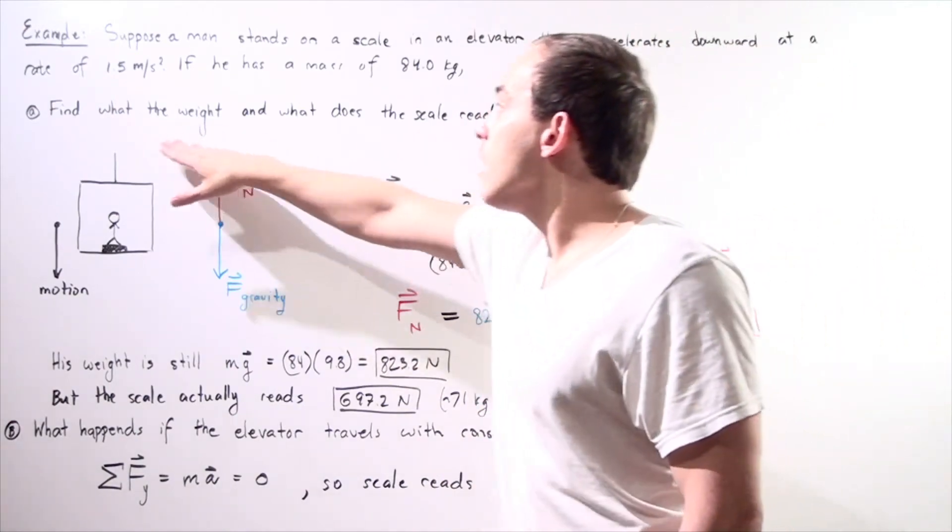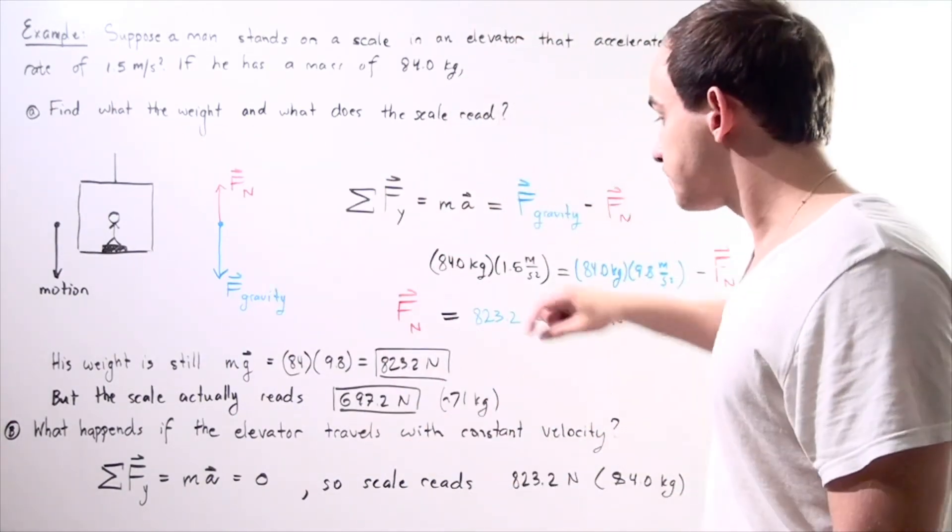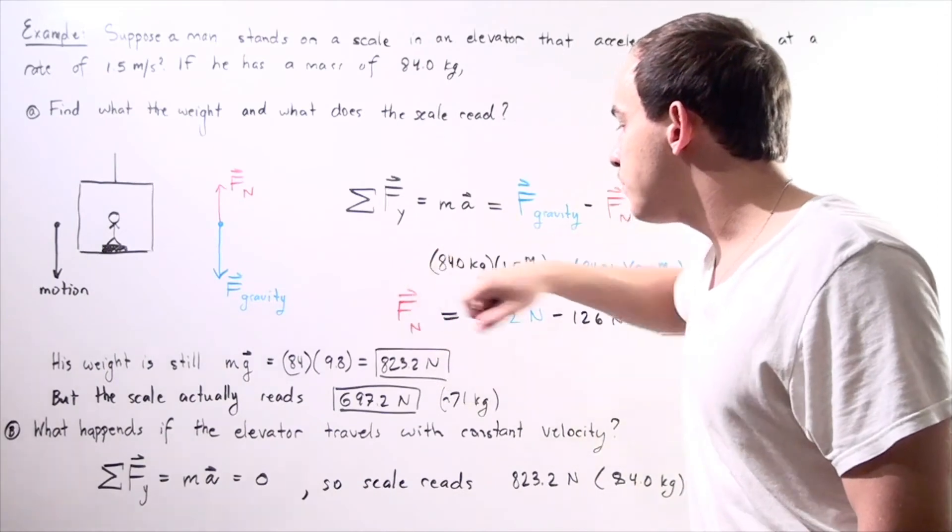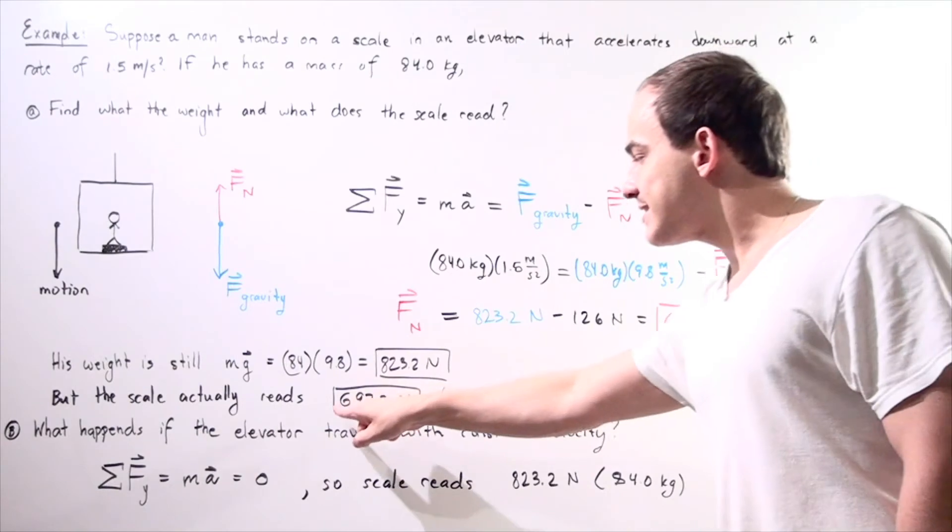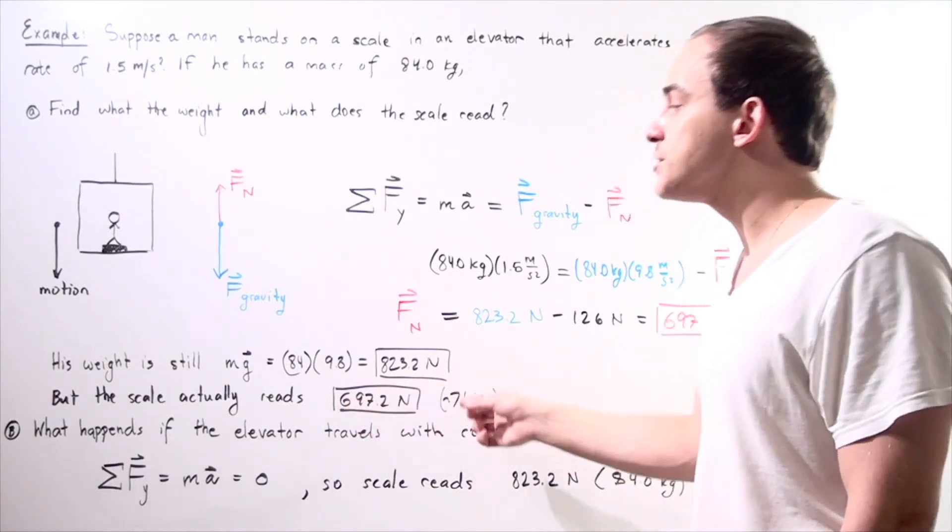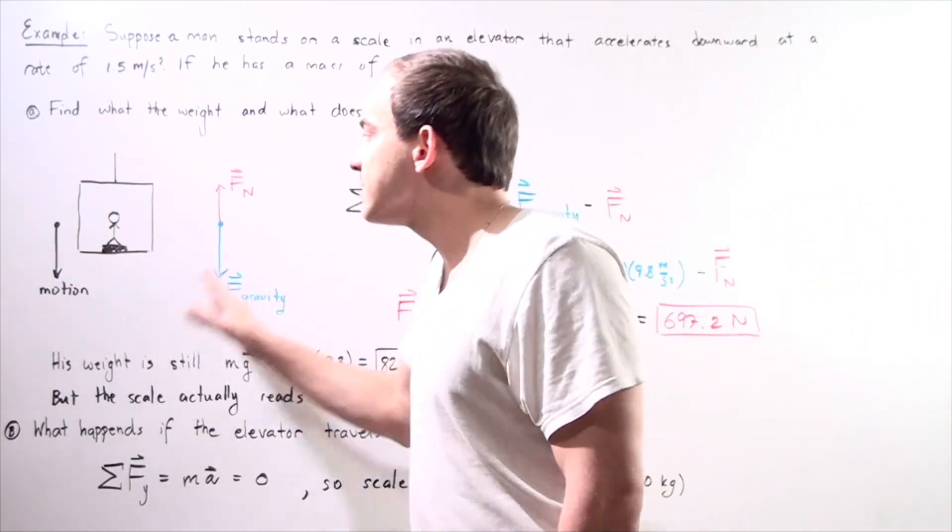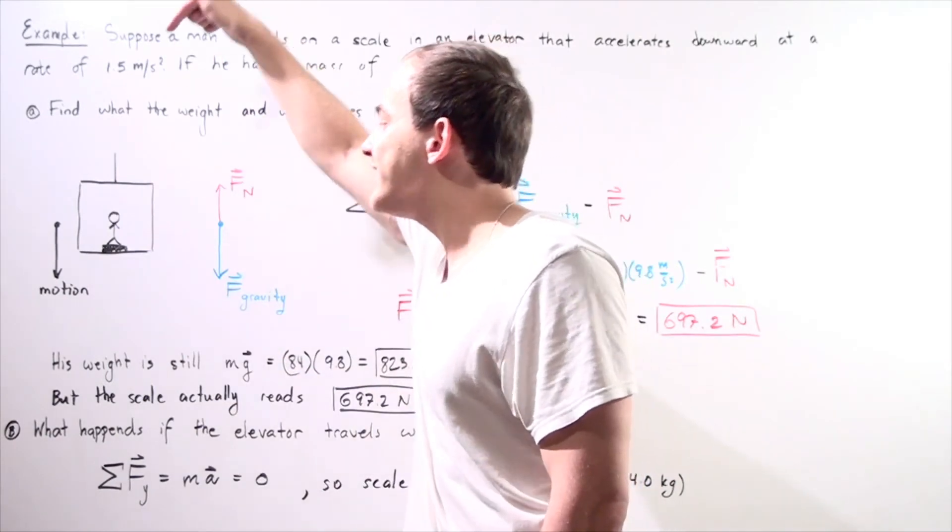The weight of the object is still 823.2 newtons, but the scale actually reads 697.2 newtons because our entire system, the person, is accelerating downward.